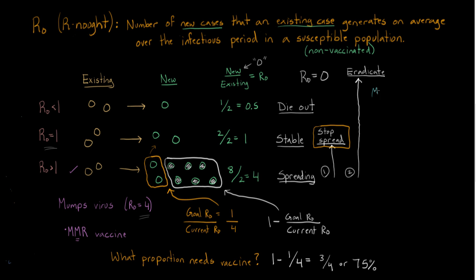Now I'm going to grab another example, just to make sure we have a clear handle on how this works. So measles has an R0 of 18. Put into words, that means for every one existing case, we see 18 new cases over the infectious period, usually a few weeks, in a non-vaccinated population. So if that's the case, how many people, what proportion needs vaccine to stop the spread?